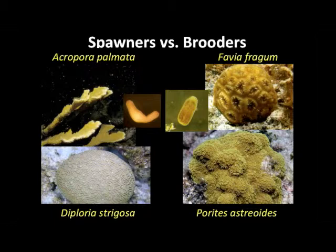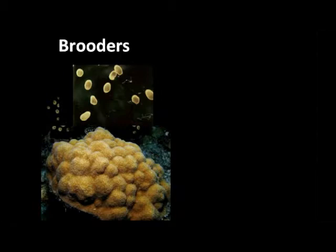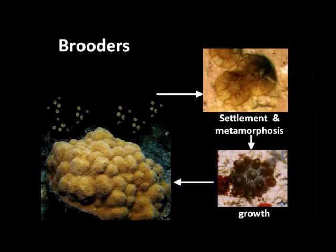Spawners and brooders represent different groups of corals. The well-known Acropora species are spawners, as is Diploria. For some of the brooders we have Favia and Porites, et cetera. Here's a life history strategy for the brooder Porites astreoides — settlement and metamorphosis, growth as a juvenile, and back to the adult stage. It's the settlement-metamorphosis stage that I'll be focusing on.